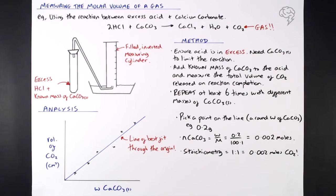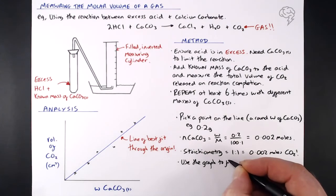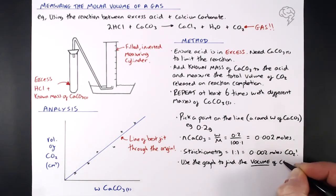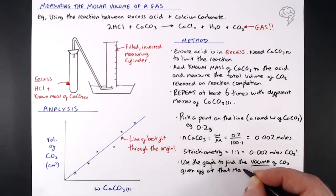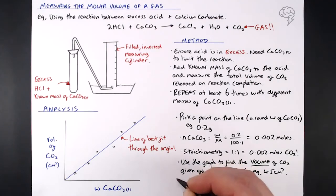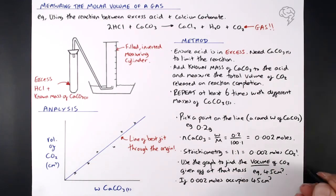So we know how many moles of CO2 we've got. We need to find the molar volume. At this point, we need to use the graph to find the volume of CO2 that's given off at that mass. So I picked 0.2, I would pick that point on the graph, go up to the line and then across, and I would find out what volume of CO2 was released by that mass of calcium carbonate. Sticking to the same mass here, let's say it ended up as 45 centimeter cubed reading from my graph. We're saying that 0.002 moles of CO2 occupies 45 centimeters cubed. How can we find molar volume? Well, molar volume is essentially just saying what volume does one mole take up? So if we know that one mole occupies 45 divided by 0.002, that gives us 22,500 centimeters cubed. And that, ladies and gentlemen, is your molar volume.